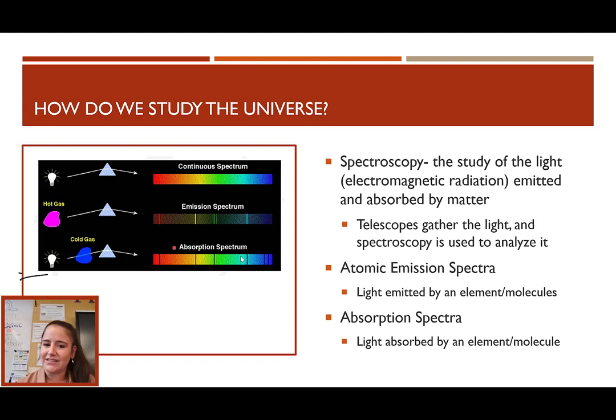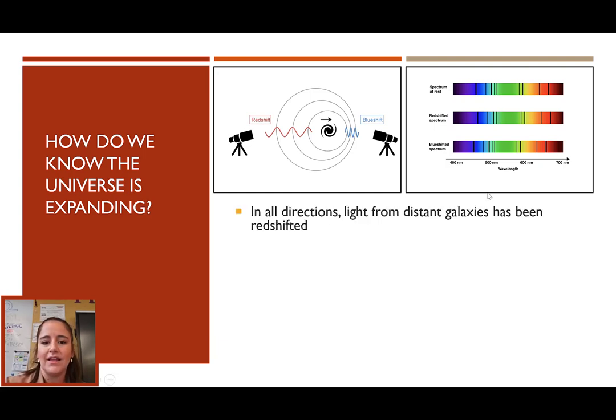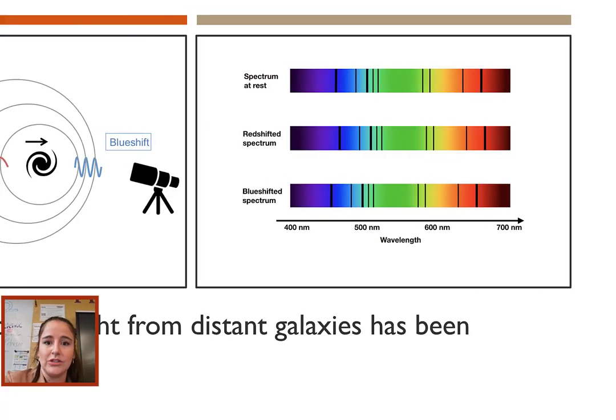One of the first things that we found from looking at these absorption spectra was that the universe was expanding. So how do we know that the universe is expanding? Well, we know that from looking at absorption spectra from distant galaxies. What we noticed was that in all directions that we looked, light from the distant galaxies has been red shifted. Now, what that means is, let's go ahead and zoom in there to see.